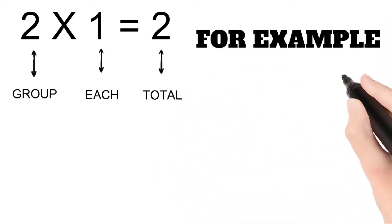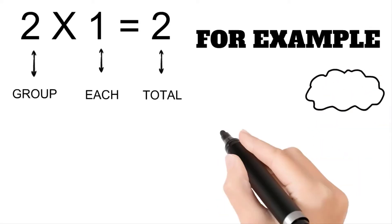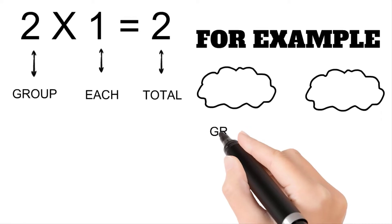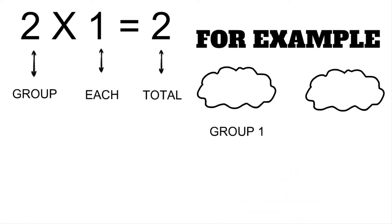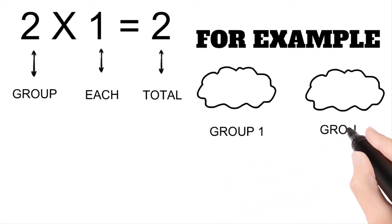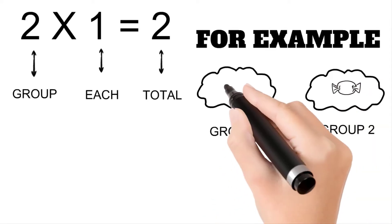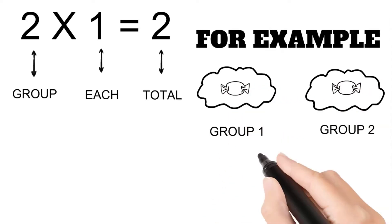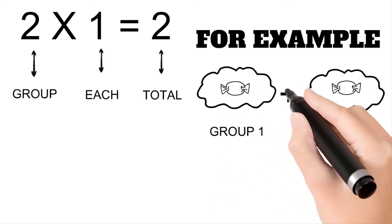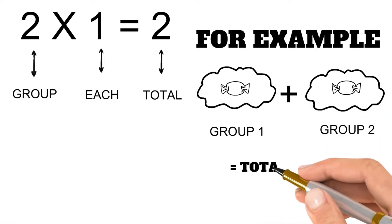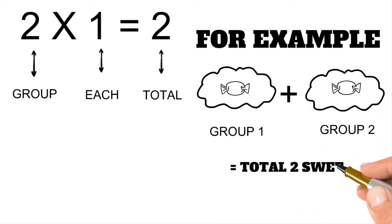For example, we have two groups — group one and group two. In each group, we have one sweet. When we add these two groups together, we will get a total of two sweets.